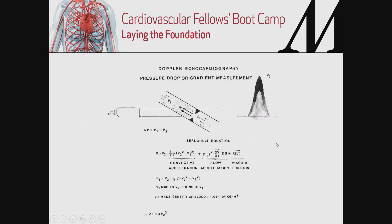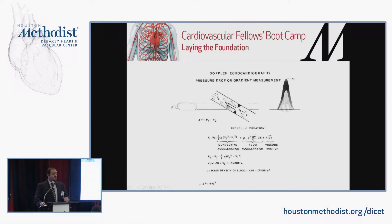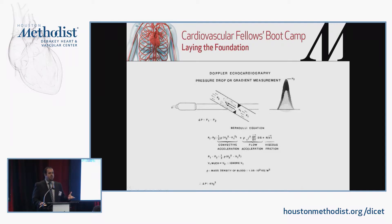Another advantage in echocardiography is hemodynamics. Bernoulli proposed an equation: if you have red blood cells moving within blood vessels across a certain lumen or diameter, there is a pressure difference between the originating and receiving chambers. Using the velocity of those moving structures, we can translate velocities into pressure. The modified Bernoulli equation — which cancels out viscous friction, flow acceleration, and convective acceleration — states that the pressure difference between P2 and P1 equals four times the velocity squared. This allows us to derive pressure from velocity.